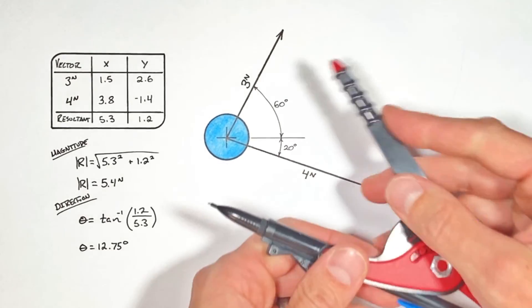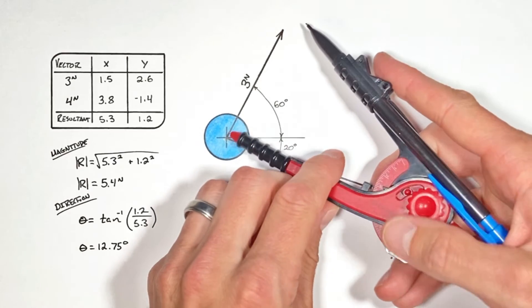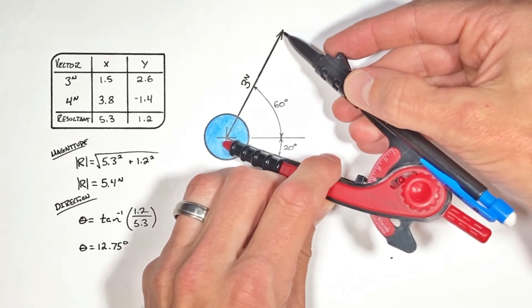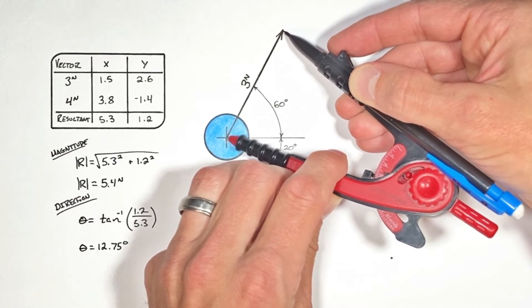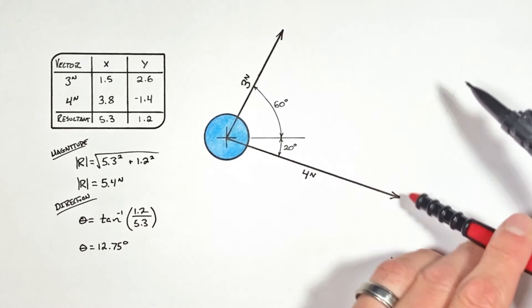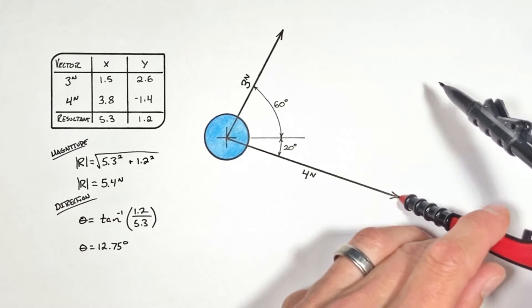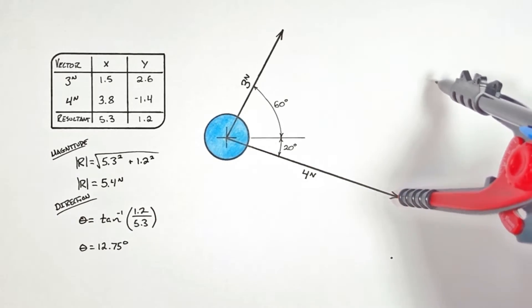Then I'm going to do the same thing with our other vector. Take my compass, make it the same length as my three Newton vector. I'm going to put it at the tip of my other vector and again draw an arc.